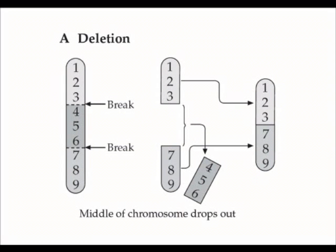Rather than being one, two, three, four, five, six, seven, eight, nine, each number representing a different gene along the chromosome, the final product of a deletion mutation would read one, two, three, seven, eight, nine. So four, five, and six would have been sections of the chromosome, or genes on that chromosome, that would have been deleted.